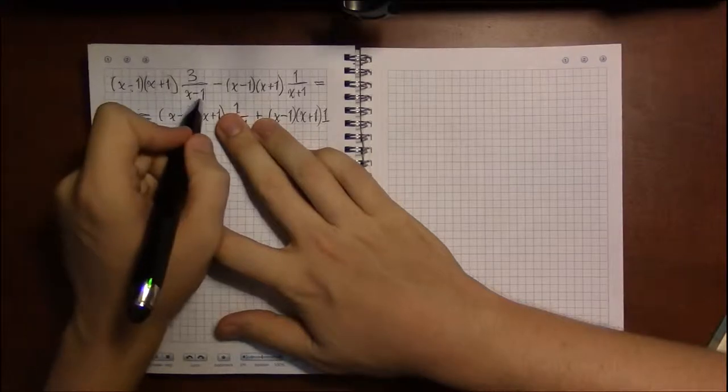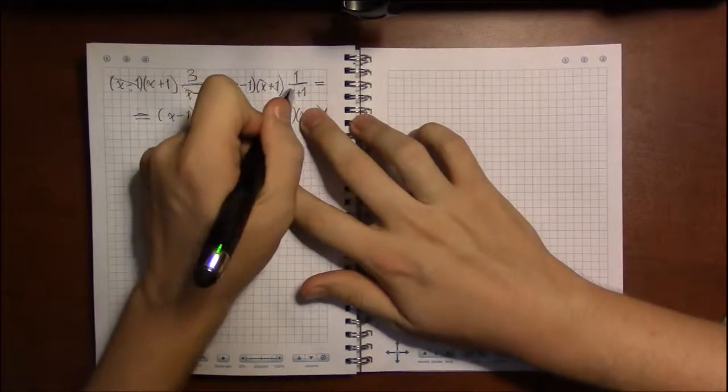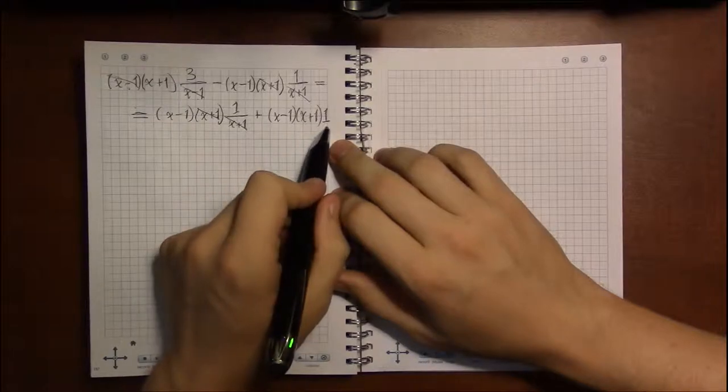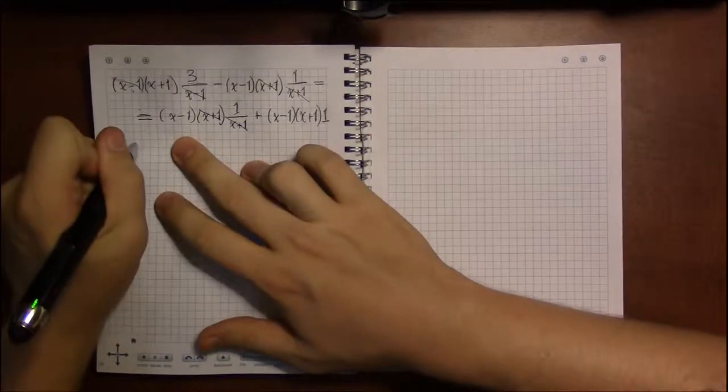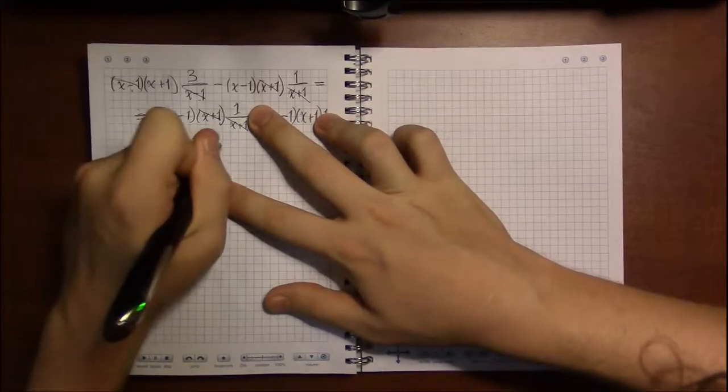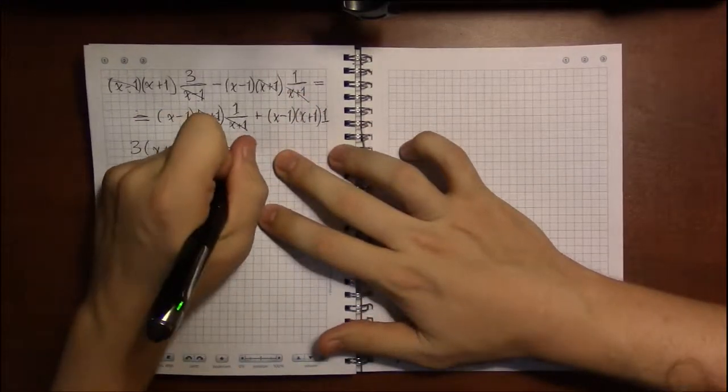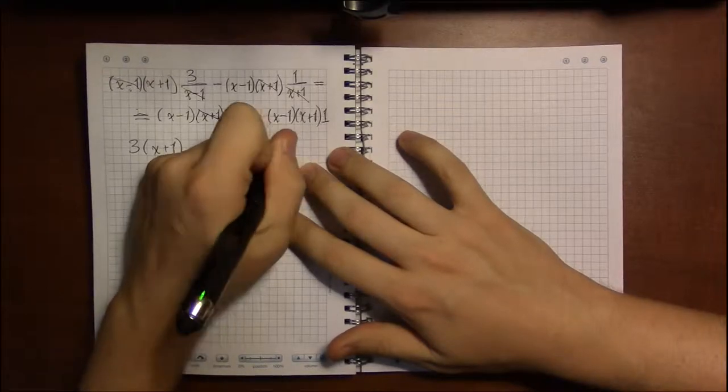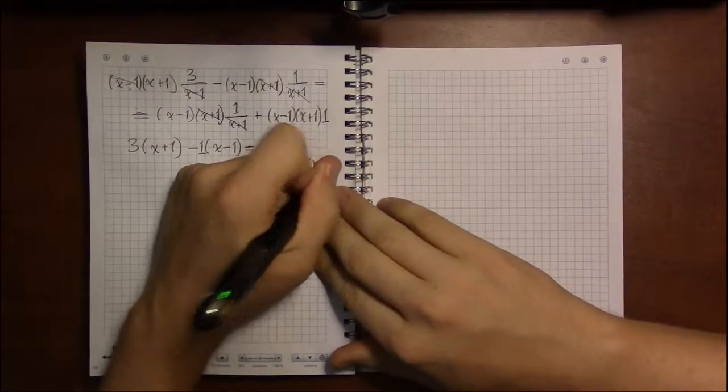So I've got x minus 1 on top and an x minus 1 on bottom in the first term, they'll cancel. Second term, x plus 1's cancel. Third term, x plus 1's cancel. Fourth term, nothing cancels because there's no denominator here. So I've got what's left over: x plus 1 times 3, x minus 1 times 1, then 1 times x minus 1, and then plus x minus 1 times x plus 1 as the last term.